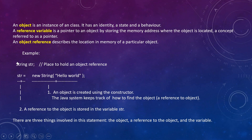So we have an example: String str — this is a variable which is going to be a placeholder for the object reference. That variable is getting assigned to the new operator, the String constructor, and I'm passing 'Hello World' in it. So from new String to the end, an object is created using the constructor. The Java system keeps track of how to find the object, and str is the reference variable which will store the reference of that object.